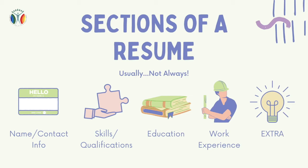We'll usually find your name and contact info at the top, followed by qualifications and skills, education, employment experience, and then usually a last section that might not always be there — but could be — which I'm going to call an extra section. That extra section doesn't necessarily need to be in a resume and can look different for everyone, but we'll talk more about that a little later on.